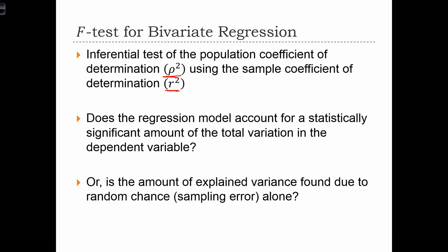We might get a sample of data and compute an r squared on that sample. And we can use an inferential test to determine whether or not the amount of explained variance that we find in our sample might be due to random chance alone, just because of the sampling error in our sample.